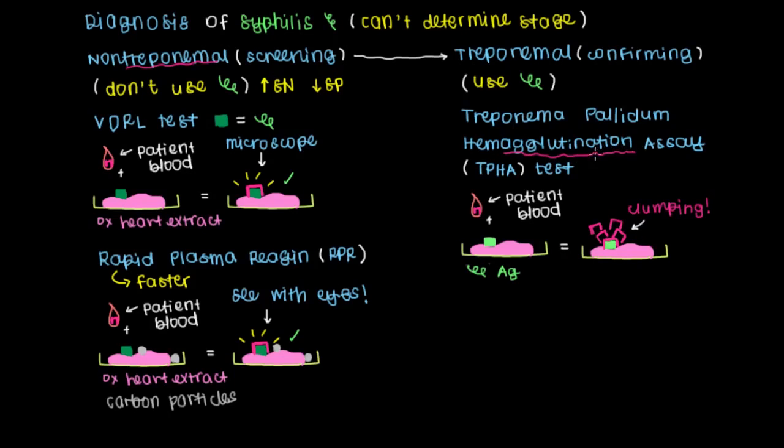So this clumping phenomenon is also known as agglutination, which is where this test gets its name. You use the treponema pallidum antigen to cause your blood to clump, which would confirm the diagnosis.